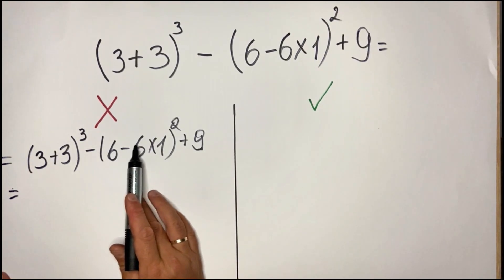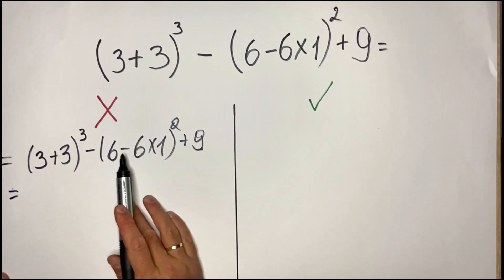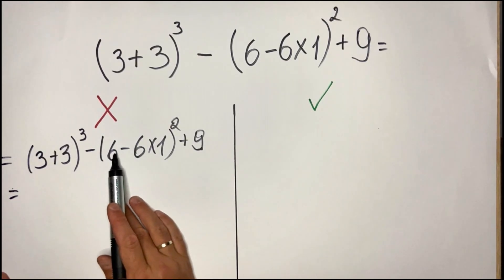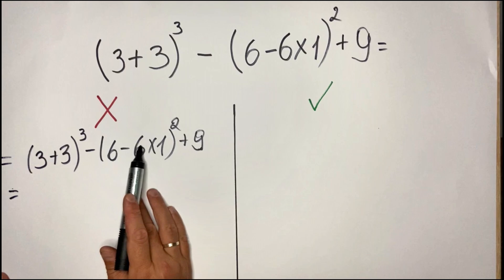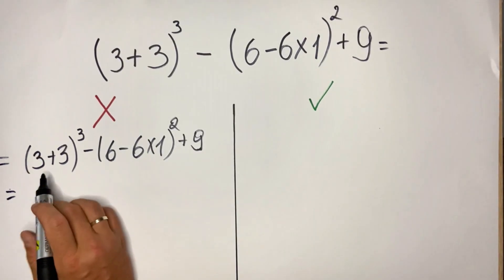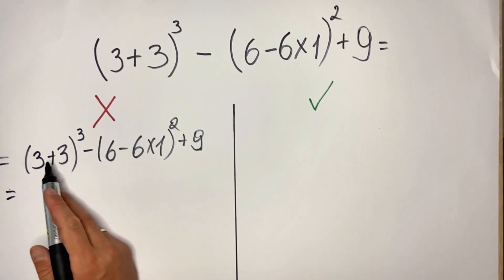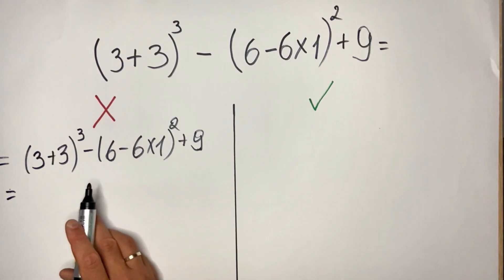So instead of doing first the multiplication in this parenthesis and then the subtraction, most people would do 6 minus 6, then multiply by 1. So here we have 3+3 is 6. 6 cubed is 216.